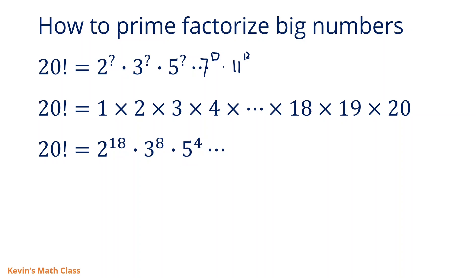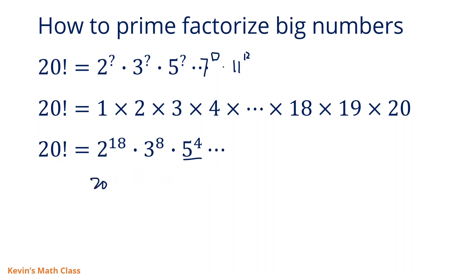Let's first consider the power of 5. In 20 factorial, the multiples of 5 up to 20 are 5, 10, 15, and 20 — so there are four of them, giving us 5 to the power of 4.